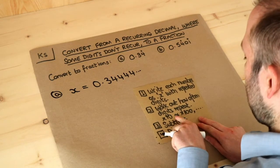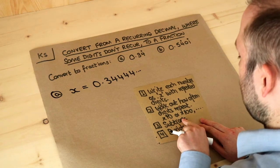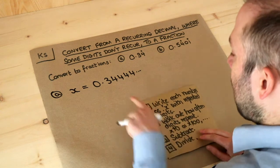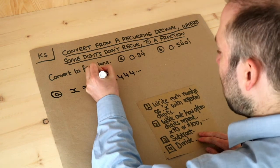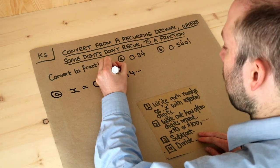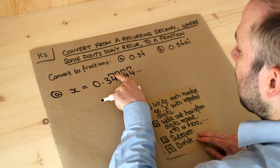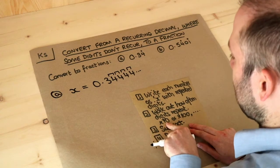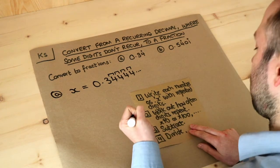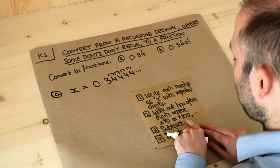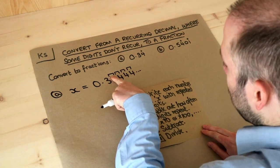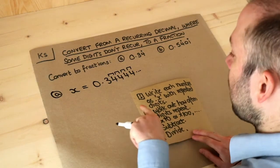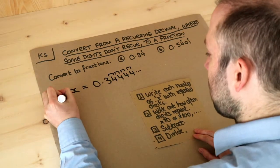And then what's step two? We want to work out how often the digits repeat and we times by 10 or 100 as appropriate. So how often does this digit repeat? Well it repeats every one digit, it's just the four that's repeating. Now if it repeats every one digit we times both sides of the equation by 10. If it repeats every two digits we times both sides by 100.